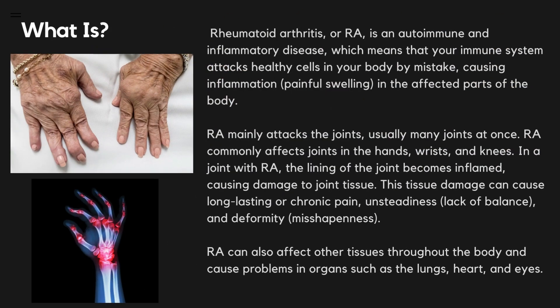Rheumatoid arthritis (RA) is an autoimmune and inflammatory disease, which means that your immune system attacks healthy cells in your body by mistake, causing inflammation and painful swelling in the affected parts of the body. RA mainly attacks the joints, usually many joints at once. RA commonly affects joints in the hands, wrists, and knees. In a joint with RA, the lining of the joint becomes inflamed, causing damage to joint tissue. This tissue damage can cause long-lasting or chronic pain, unsteadiness, lack of balance, and deformity. RA can also affect other tissues throughout the body and cause problems in organs such as the lungs, heart, and eyes.